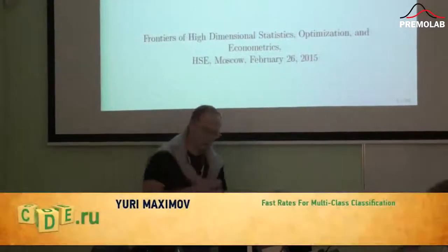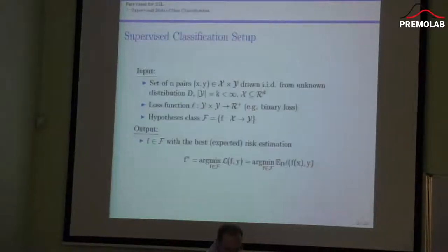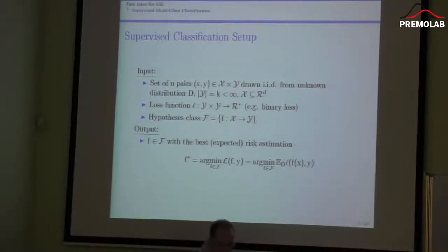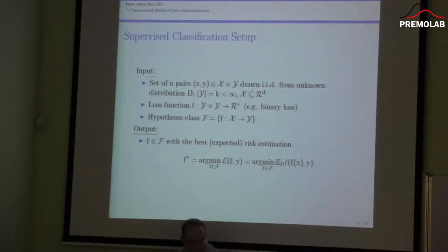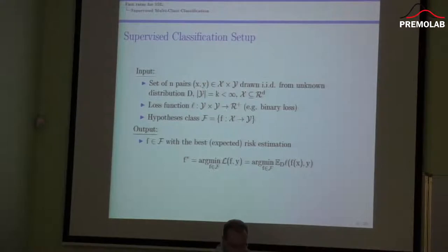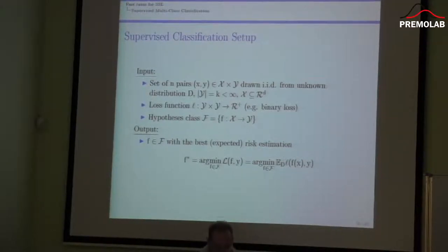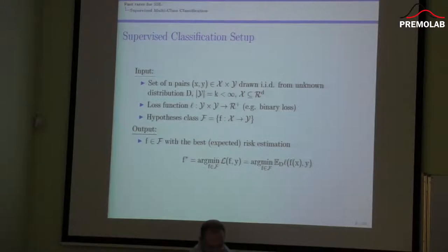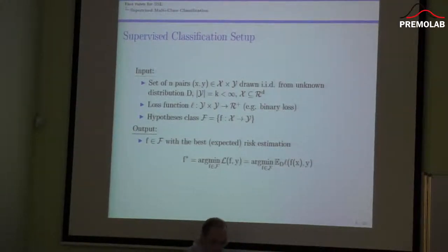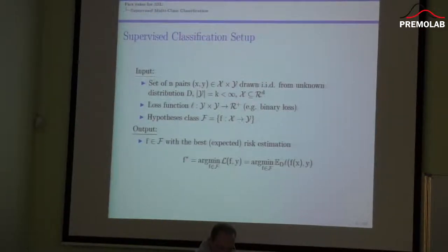Today I want to say a few words about fast rates for supervised and semi-supervised multi-class classification. I assume that we have a standard classification problem, namely a set of n pairs which is a sample of labeled examples. We have a finite number of classes, a certain loss function associated with misclassification — in the simplest case it's a binary loss, which is zero if we predict the correct class and one otherwise. We also have a hypothesis set, and our goal is to find the best classifier, the one which minimizes expected risk.